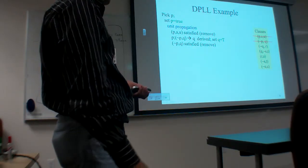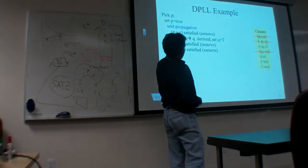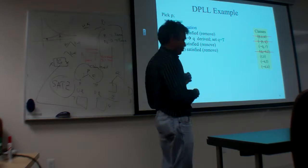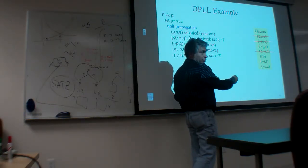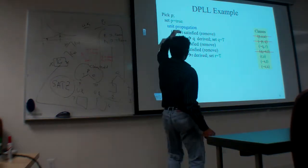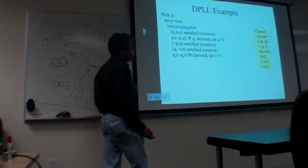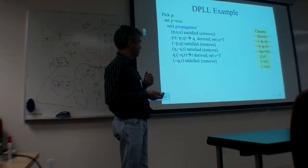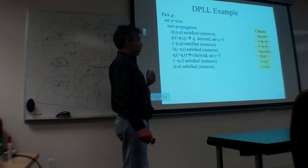And then NOT-PQ is satisfied because Q has been set — remove that from consideration. Q-NOT-ST is also satisfied because Q equals true — remove that. Then since Q is true, and from NOT-Q OR R, R must be derived: set R equals true. So this is first level of recursion, second level, third level. You said R equals true; because R equals true, NOT-Q-OR-R is satisfied — remove that from consideration.